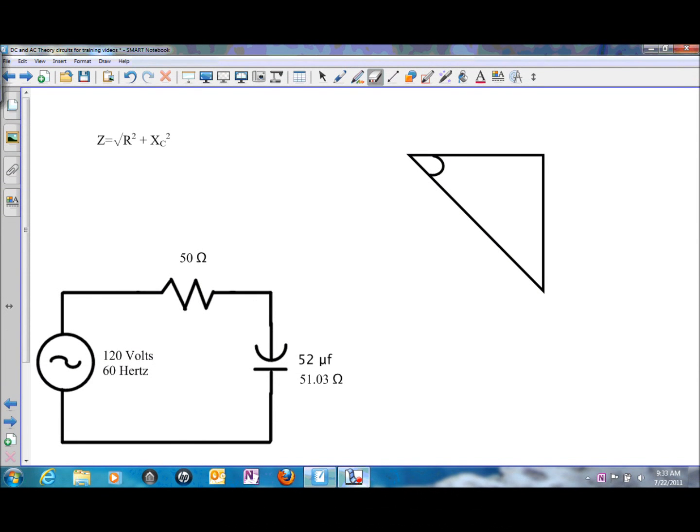In this presentation we'll be solving for impedance in a series RC circuit with one resistor and one capacitor in series with an AC power source. Similar to solving for inductive reactance, we're going to be using Pythagorean's theorem and a triangle method.